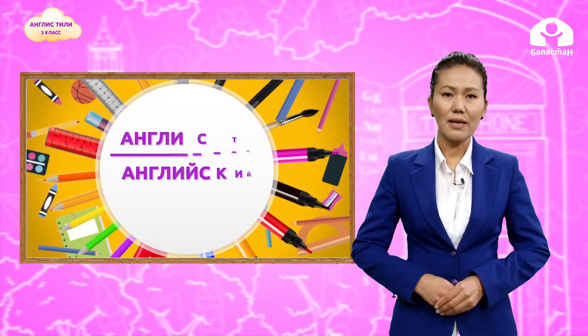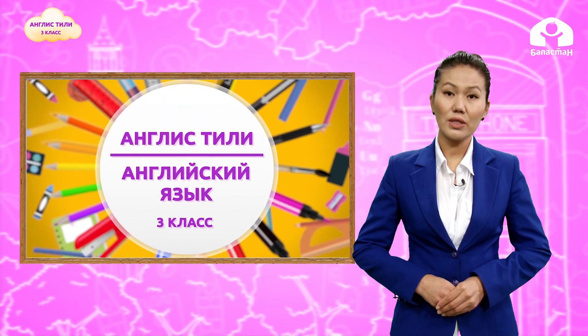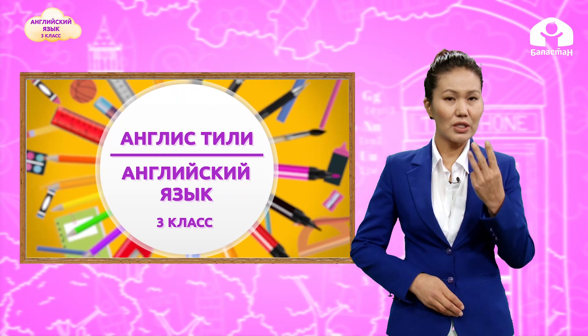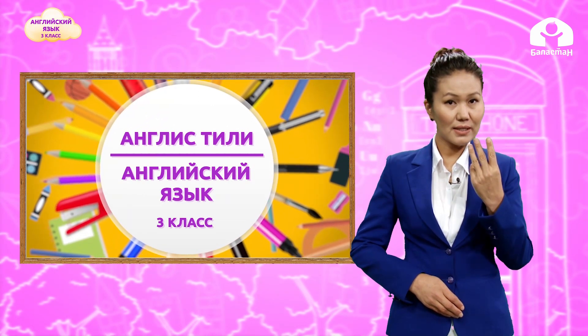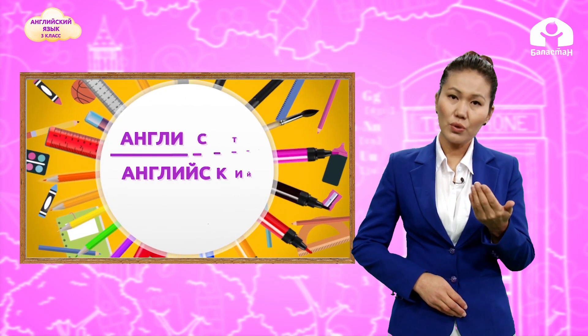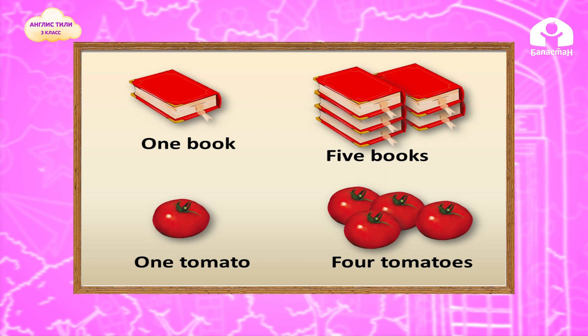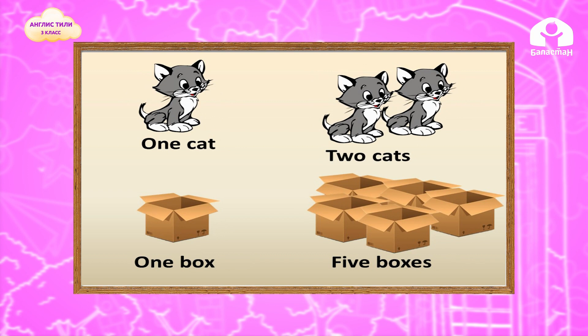Children, let's play a game. Look around and say what do you see. For example: I see one desk, two blackboards, three windows, and five chairs and three desks. Now say what do you see. Children, let's count and write the plural form of nouns: one banana — four bananas, one fox — two foxes, one book — five books, one tomato — four tomatoes, one cat — two cats, one box — five boxes. Okay, well done!